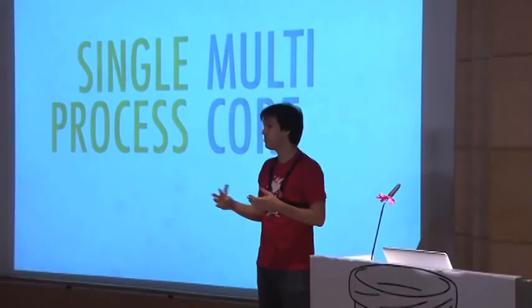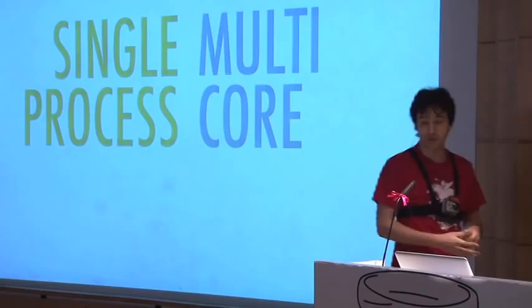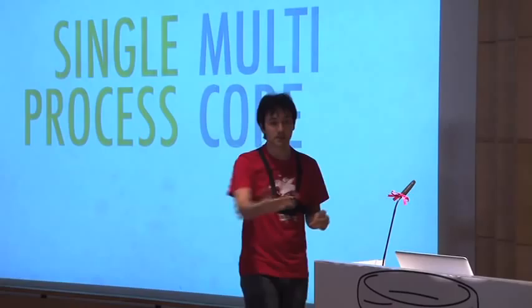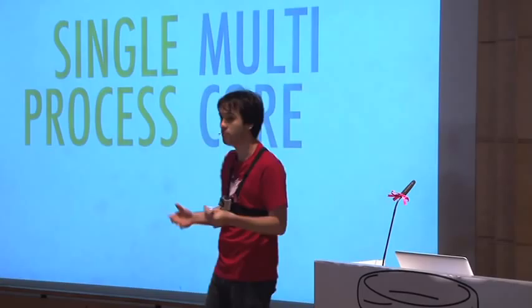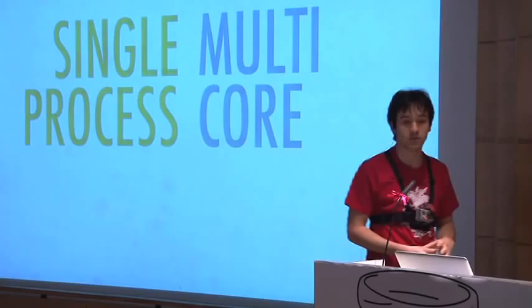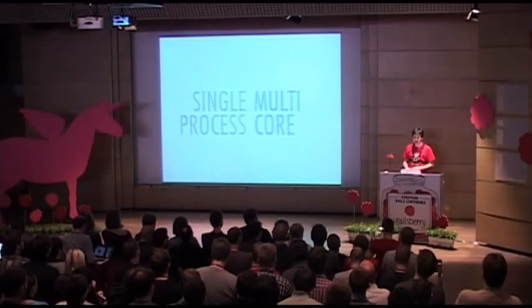People deploying Rails applications today are doing multi-process, multi-core. If you have a machine with four cores, you start a number of Rails processes so you can use all cores. We are not going to talk about this today. I want one process to use all my cores. The number of cores in our machines is increasing — you can easily get a server with 16 cores. We don't want to start 16 Rails processes; that's too much memory.